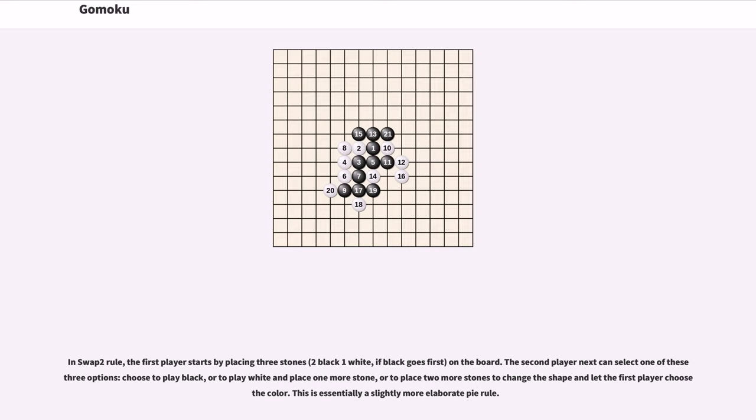In Swap 2 rule, the first player starts by placing three stones, two black one white, if black goes first, on the board. The second player can select one of these three options: choose to play black, or to play white and place one more stone, or to place two more stones to change the shape and let the first player choose a color. This is essentially a slightly more elaborate pie rule.